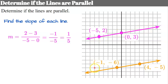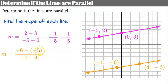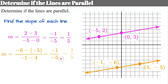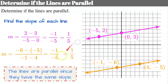Now let's find the slope of the orange line to check if it's parallel. The change in y is negative 6 subtract negative 5, and the change in x is negative 1 subtract 4. Adding the opposite gives us negative 1 over negative 5, which simplifies to 1 fifth. These lines have the same slope, so the lines are parallel.